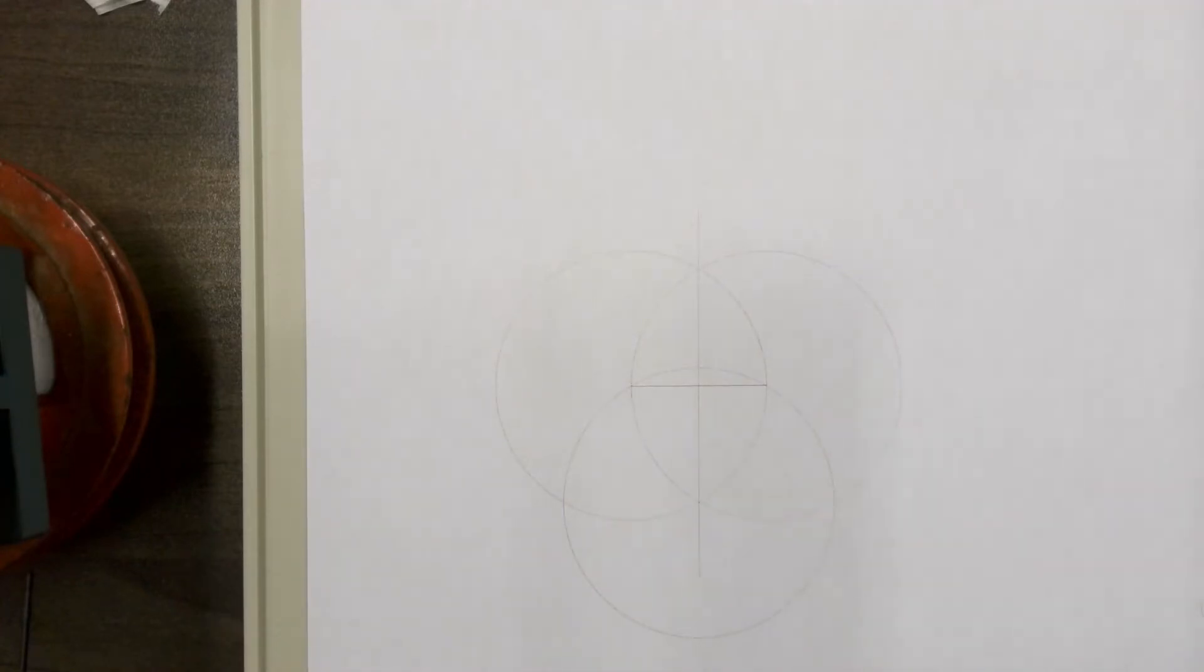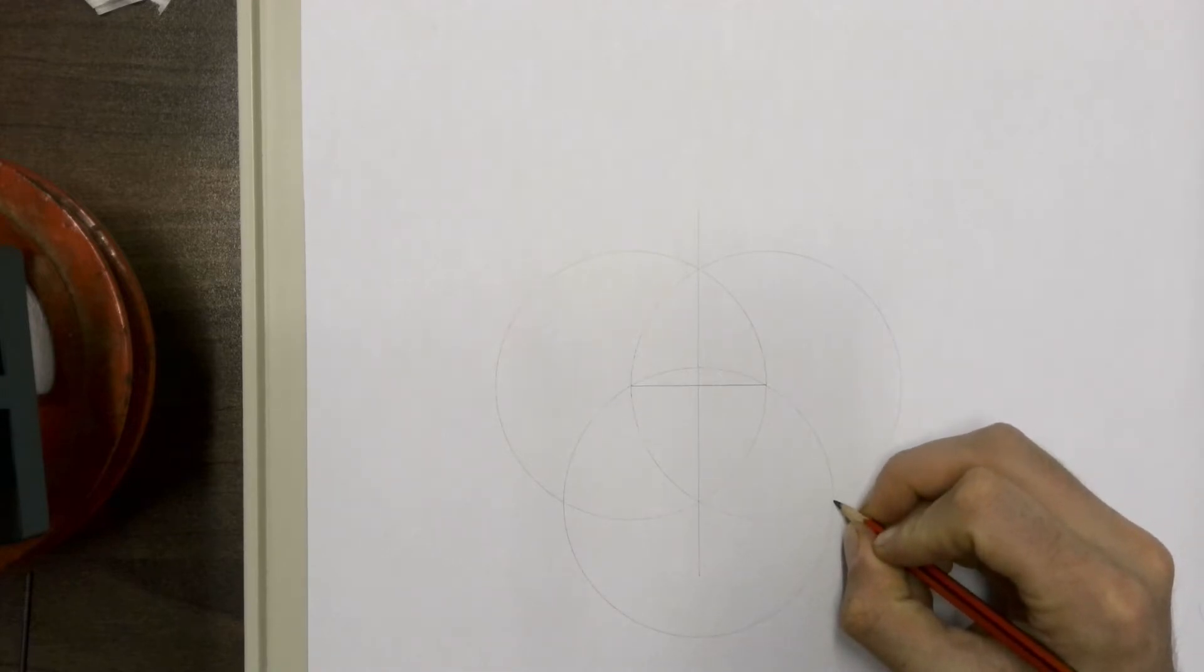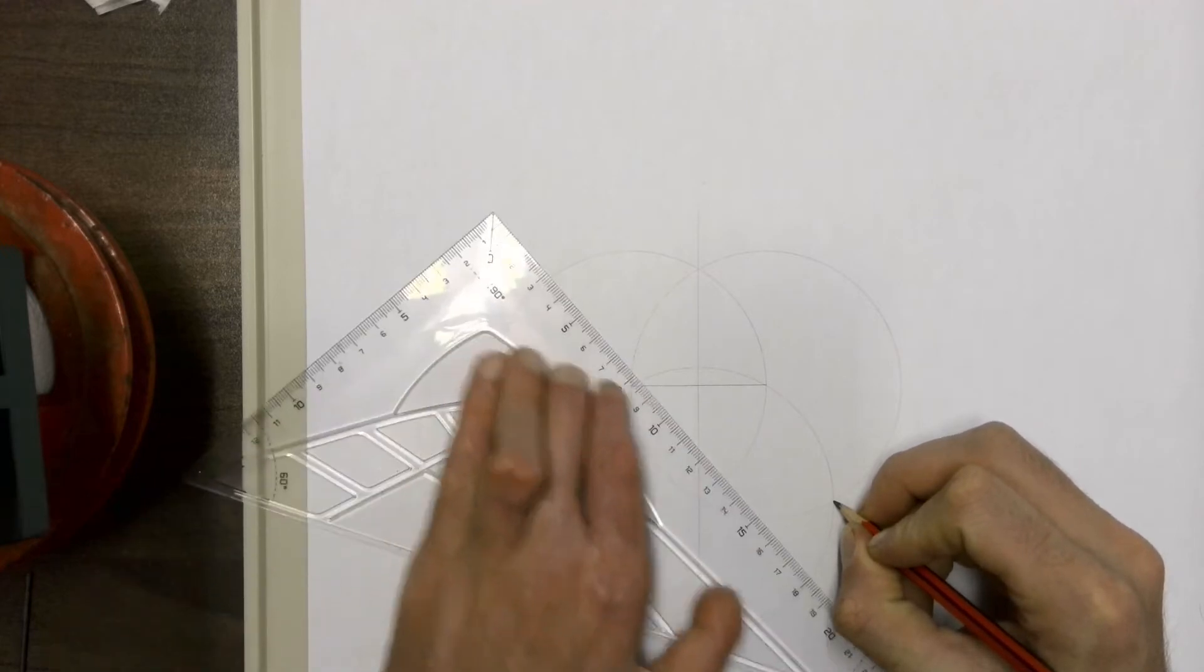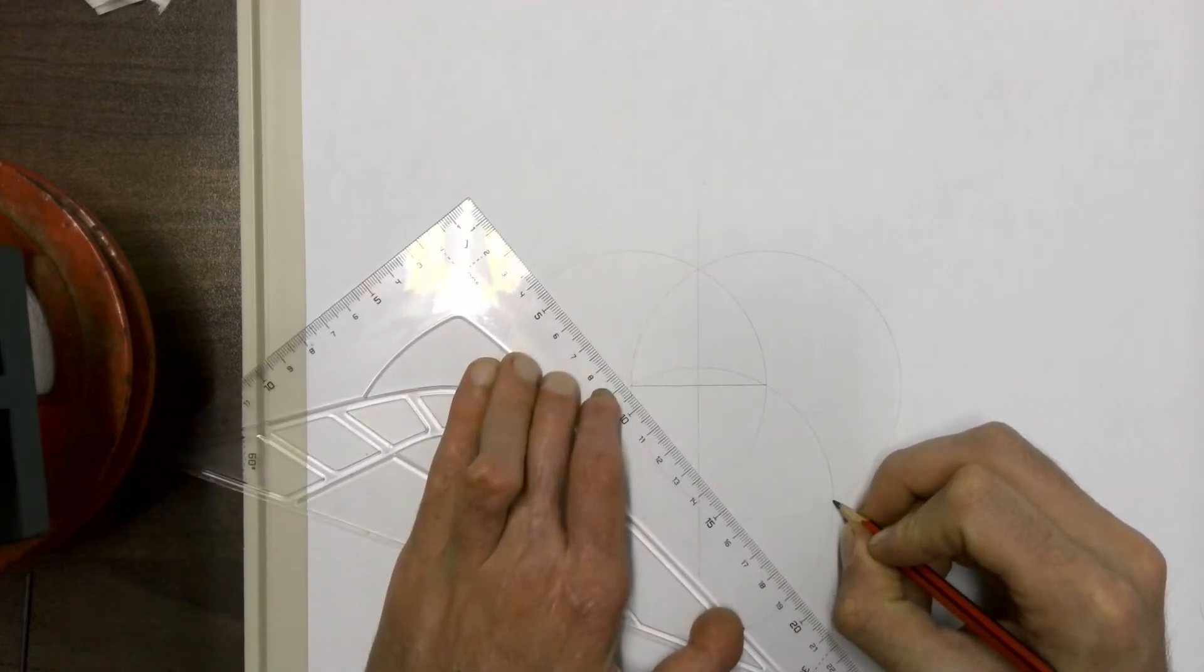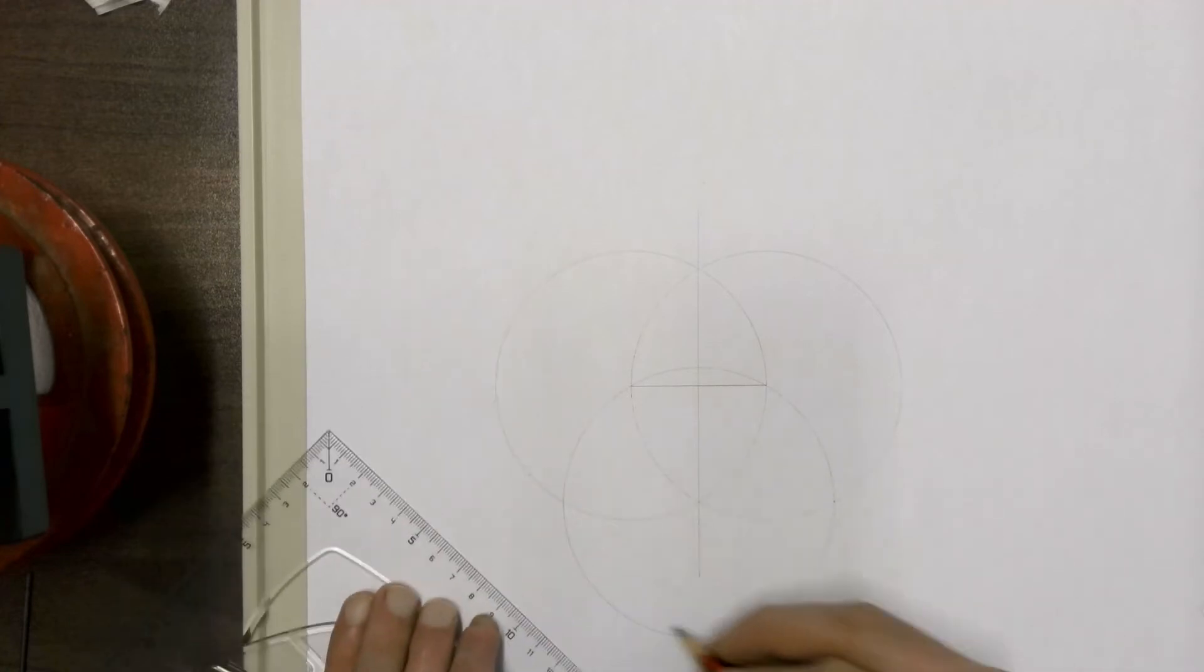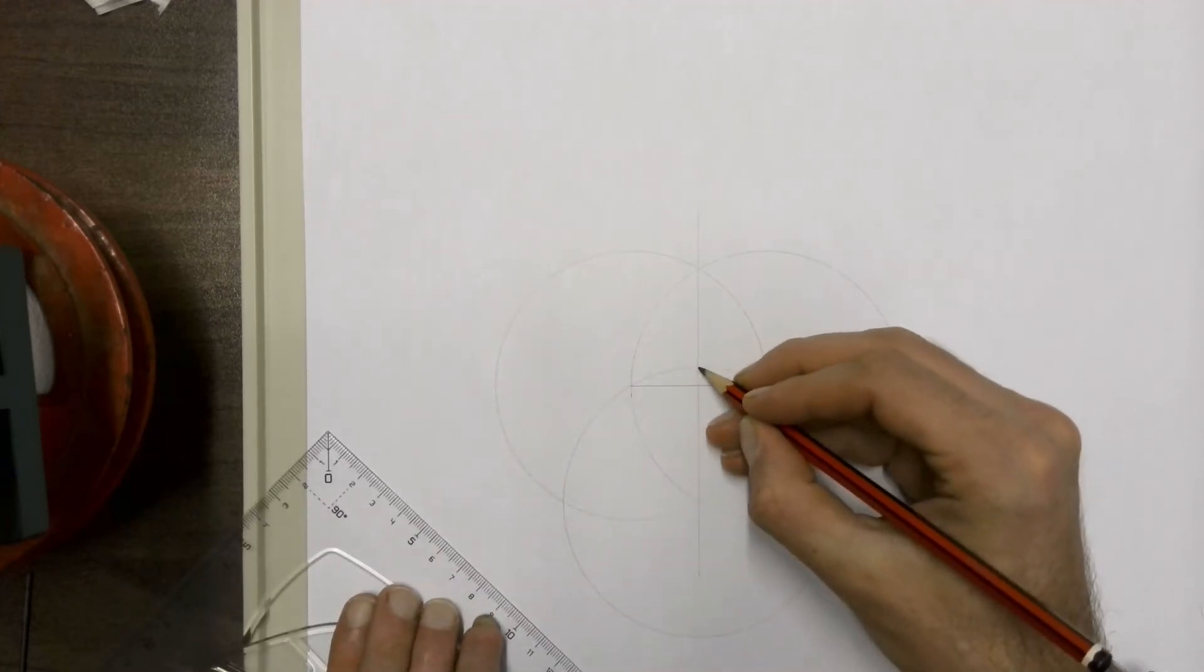Then draw a line from the right-hand intersection point between these two circles, going straight through the point where the bottom circle intersects that bisecting line you've drawn.